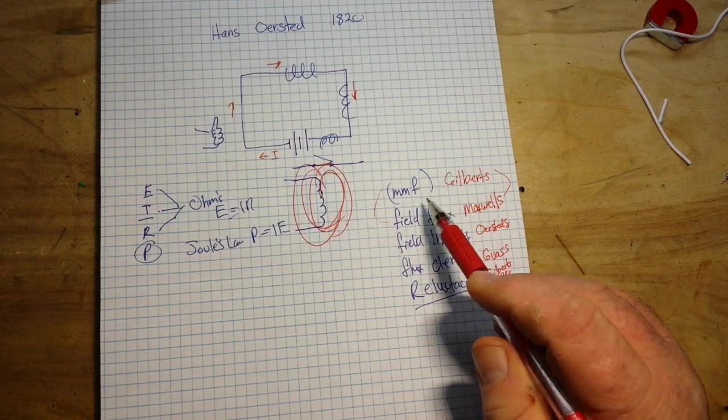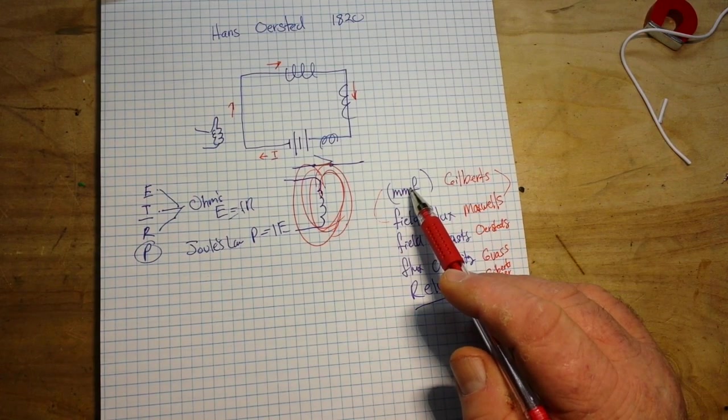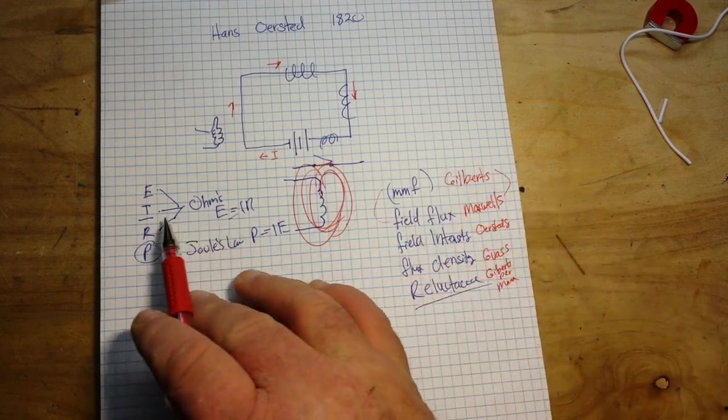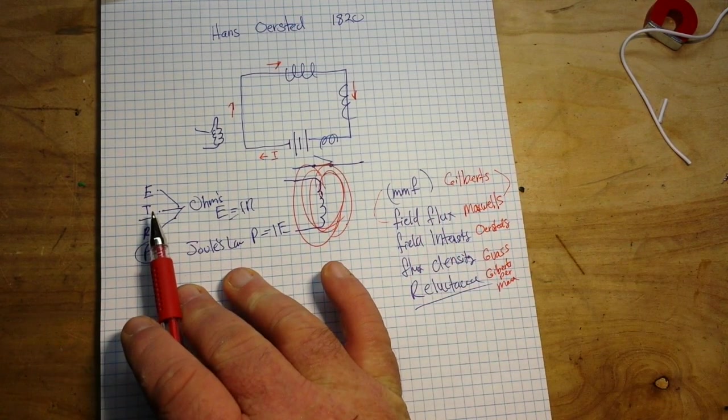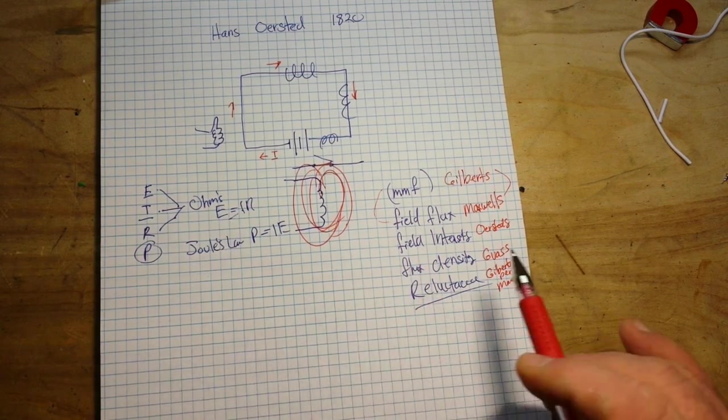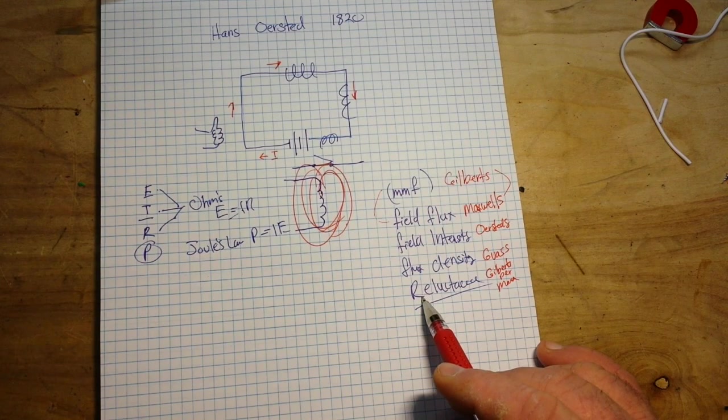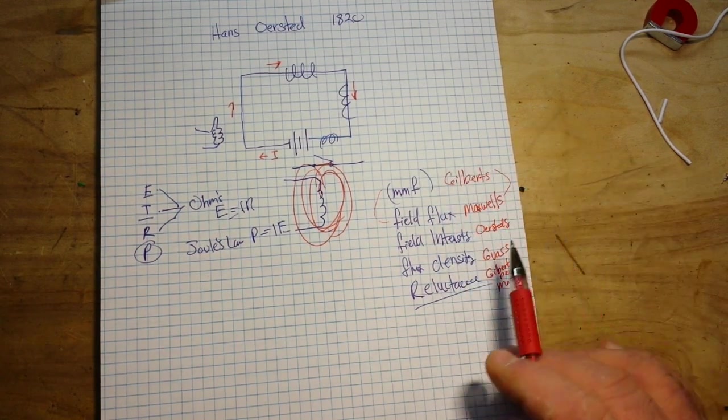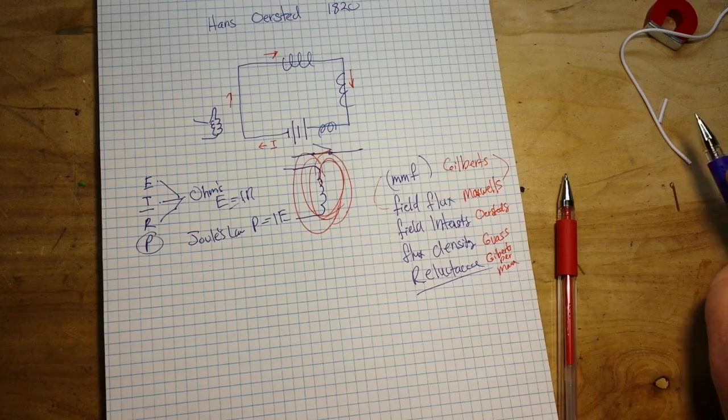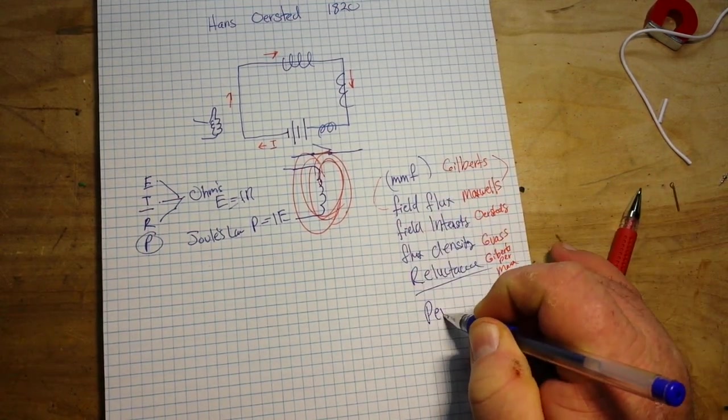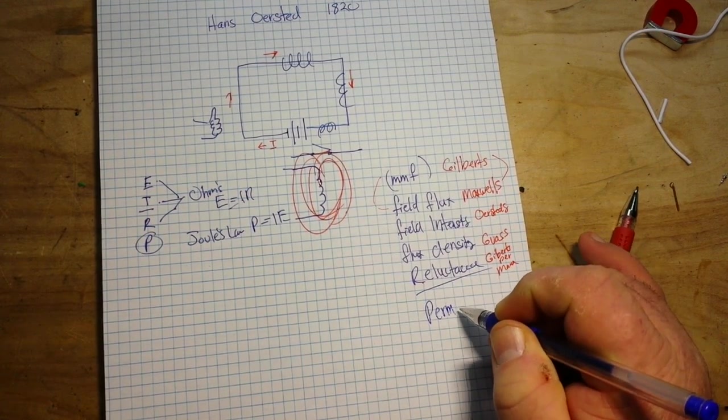Our reluctance is our field force per our field flux, so just like we have on the electric side of the fence E equals IR, we have over here our reluctance, gilberts is gilberts per maxwell. And yeah I know for those of you who are up on this stuff, I left something out. What I left out was permeability. We're going to get to that in another video.